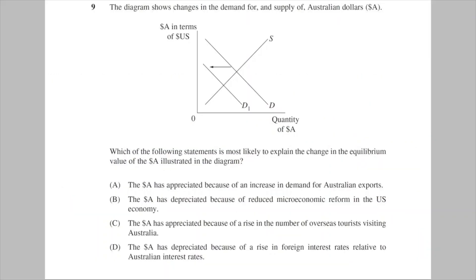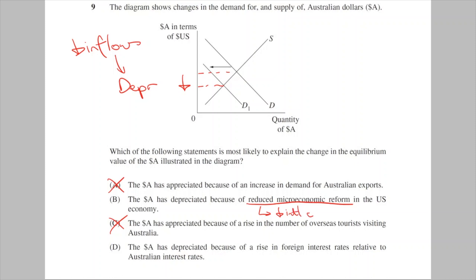For more of a challenge, let's check out 2015's question 9. What we see in the diagram is a depreciation caused by a decrease in demand, which again means less inflows. Which of these scenarios would cause this? A and C are obviously wrong because this isn't an appreciation. B is a depreciation, but the cause is wrong. Microeconomic reform generally makes economies more competitive, so in this case the US would become less competitive, buy more Australian exports, and actually cause an appreciation. That's why B is wrong.